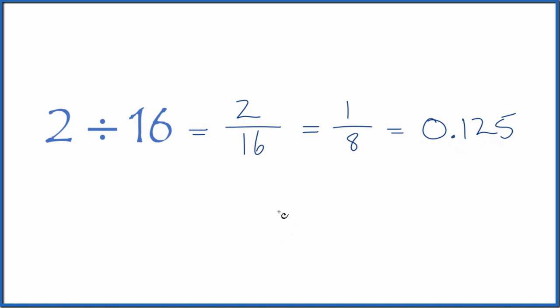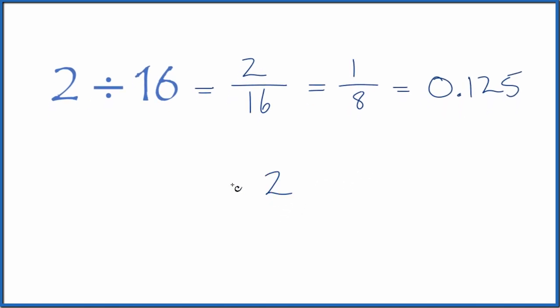If you need to do this longhand, you can take 2 and see how many times 16 goes into 2. It doesn't go into 2. Let's call this 20 here and put a 0 with a point up here. 1 times 16 goes into 20. Subtract, we get 4.